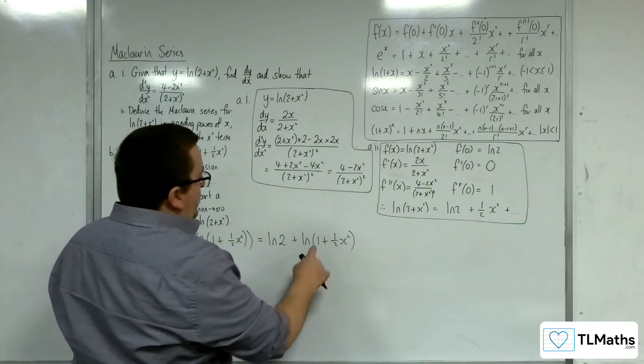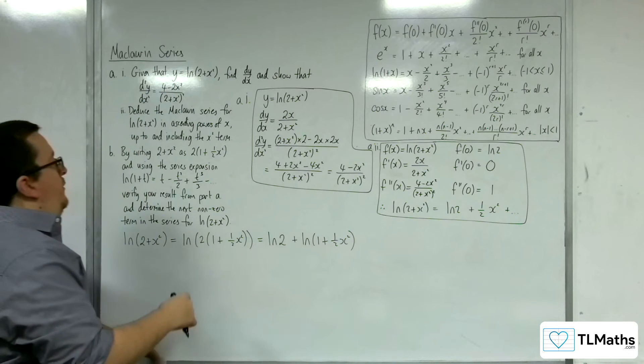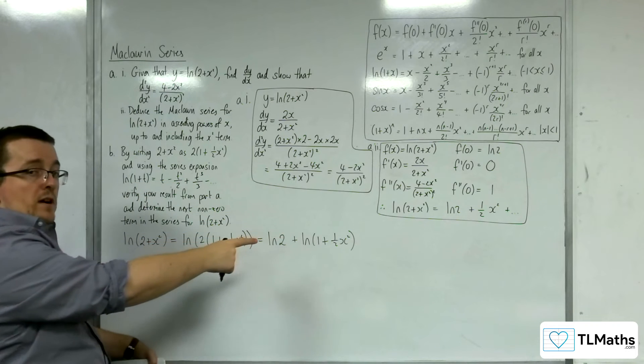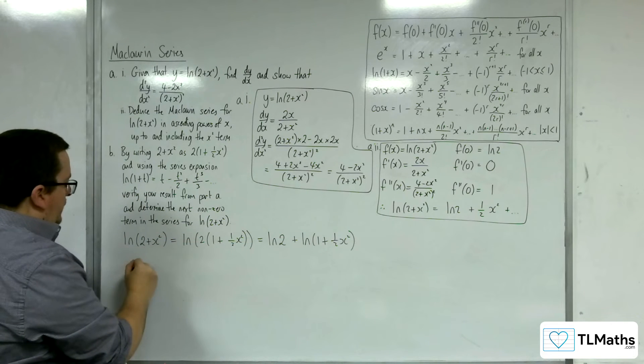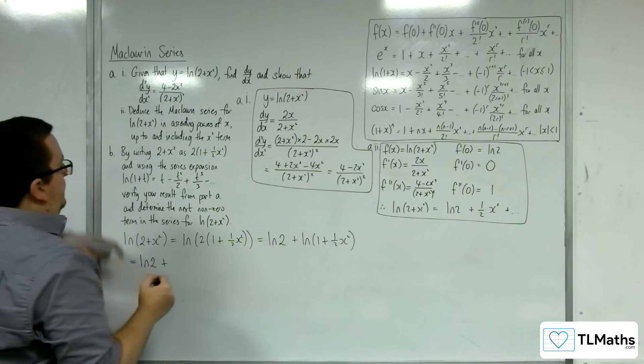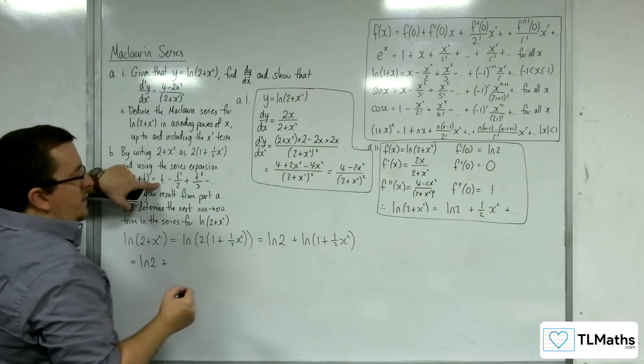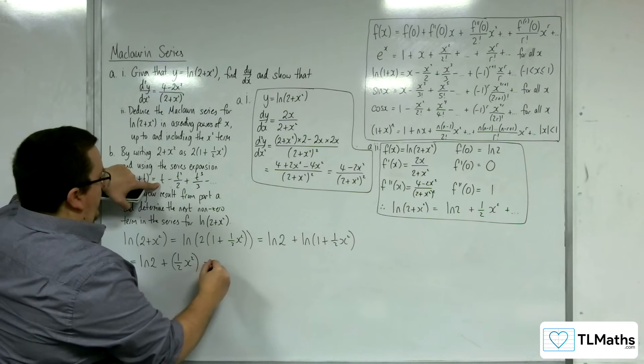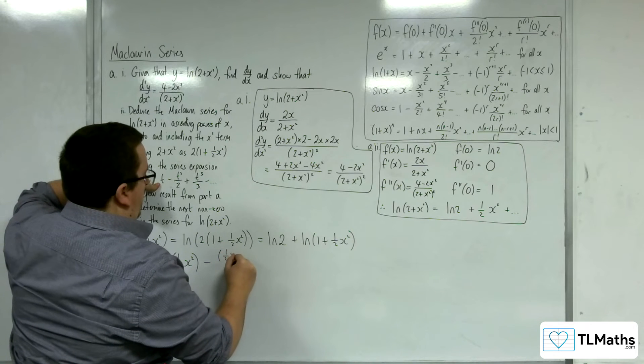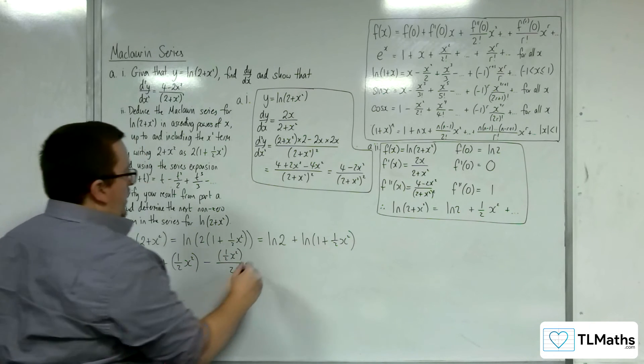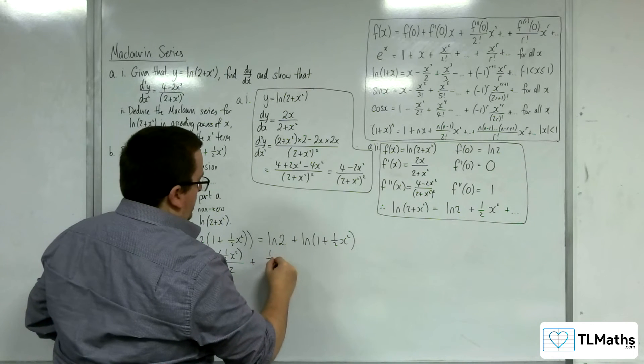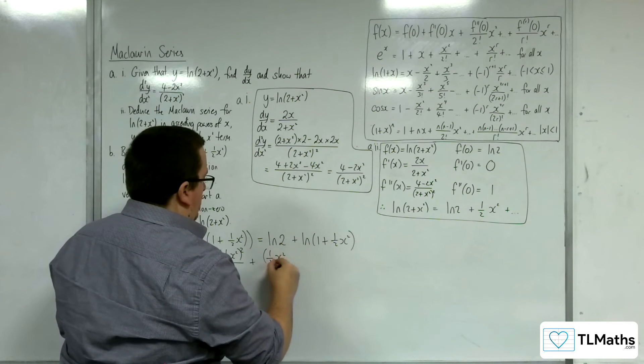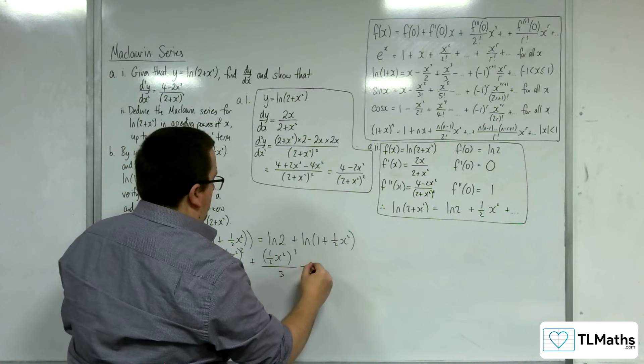So what I can now do is that this is now in the form that I can utilise the series expansion by substituting the t in this case for the half of x squared. So this is equal to log 2 plus, so substituting in the t for half x squared, I'm going to get 1 half x squared in there, take away, then 1 half x squared squared over 2 plus, 1 half x squared cubed over 3, etc.